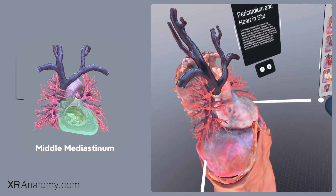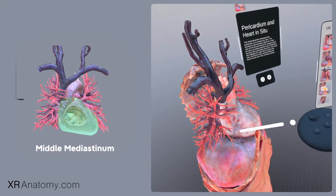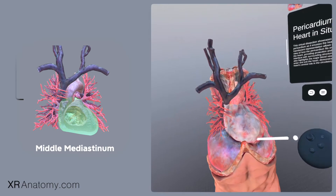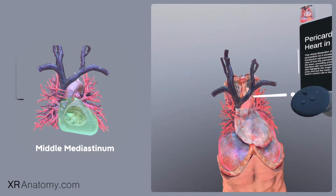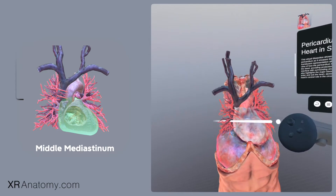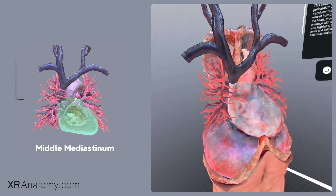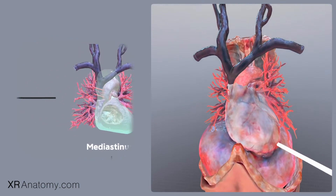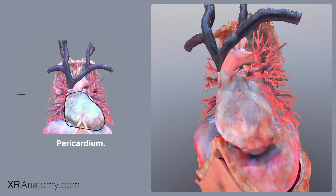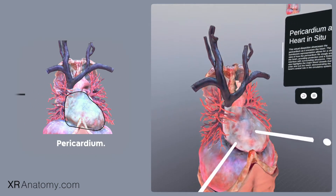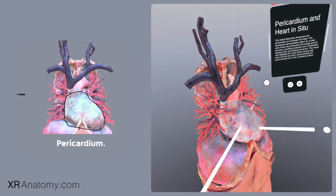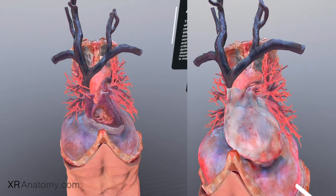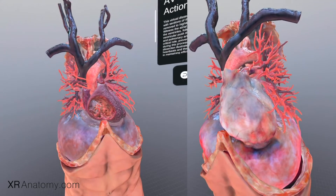This area, known as the middle mediastinum, serves as a central hub for the heart, pericardium, origins of the great vessels, and various nerves. If we take a look at this specimen here, an important thing to note is that the heart sits in a membrane known as the pericardium — it is covered by it.